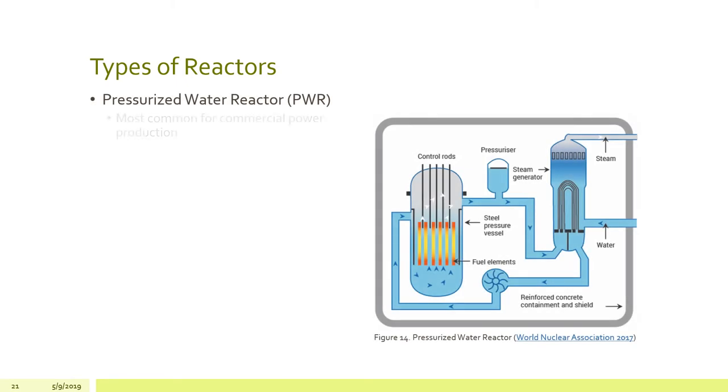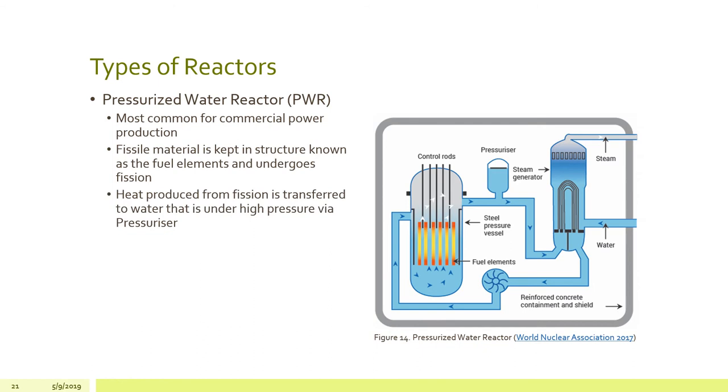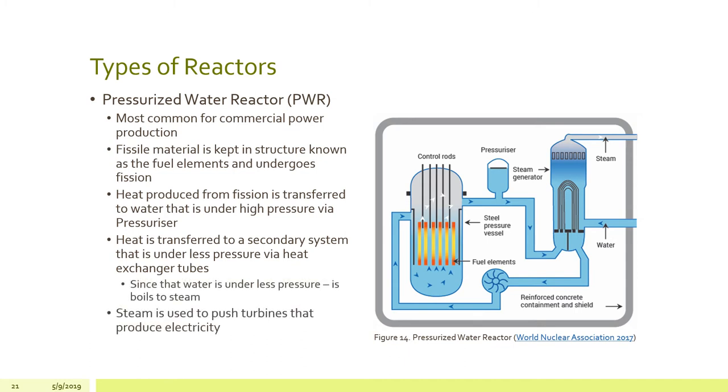Firstly, we have the pressurized water reactor. And these are the most common for commercial power production, like we saw with the graph. And fissile material is kept in a structure known as a fuel element in the primary system. And that fuel element is what's undergoing fission and generating heat. And the heat produced from that is transferred to water, which is under high pressure via the steam generator. And that heat is transferred to a secondary system, which is under far less pressure, but is separated physically from the primary system, and transfers that heat into the lower pressure secondary system, which turns to steam, and is used to push turbines to generate electricity.